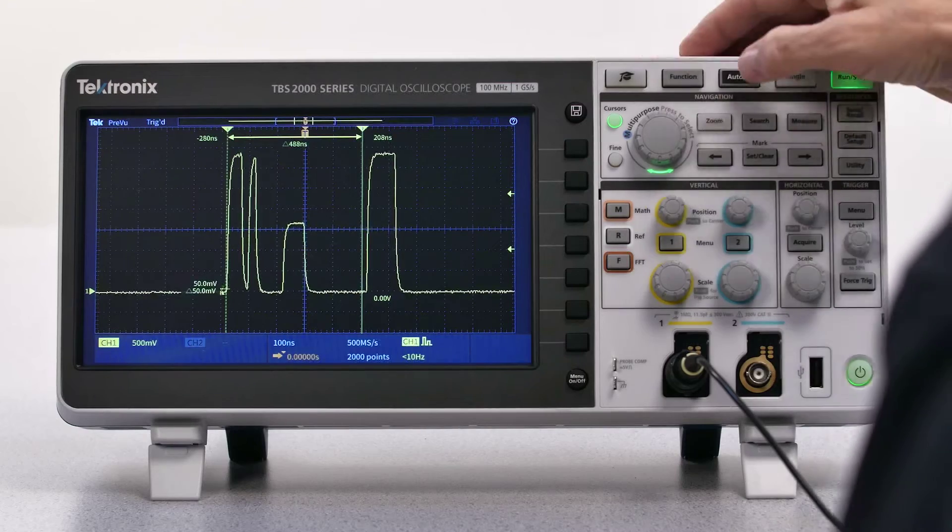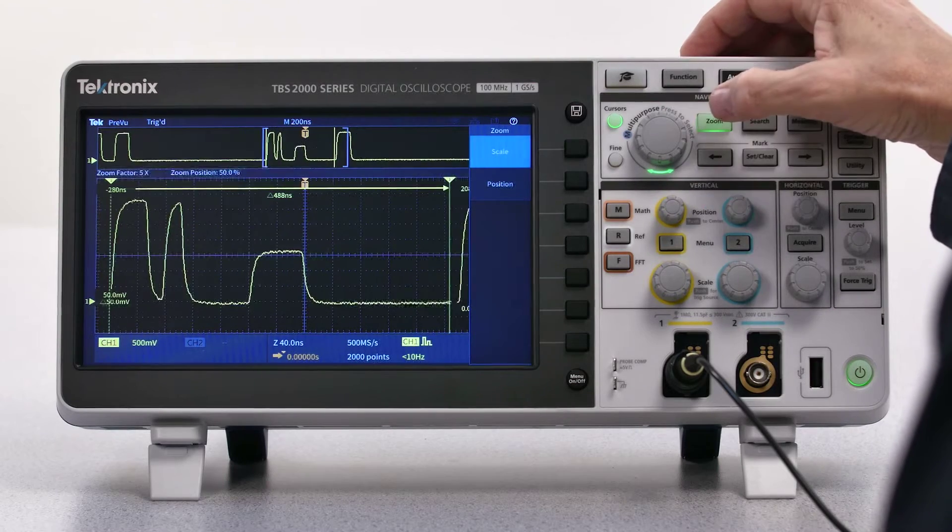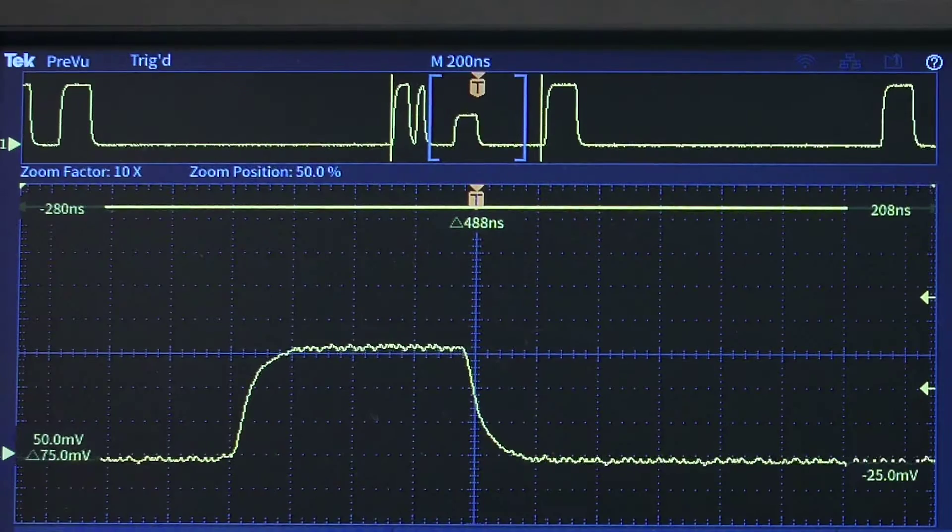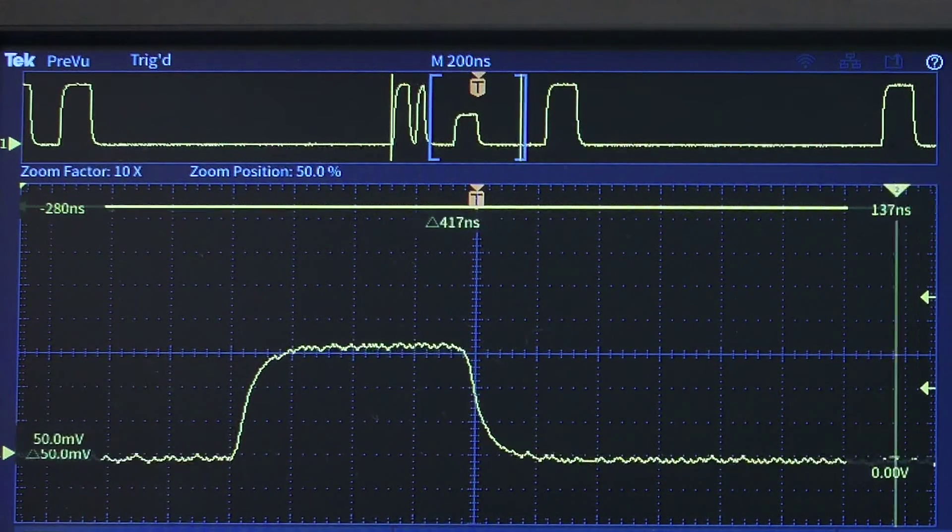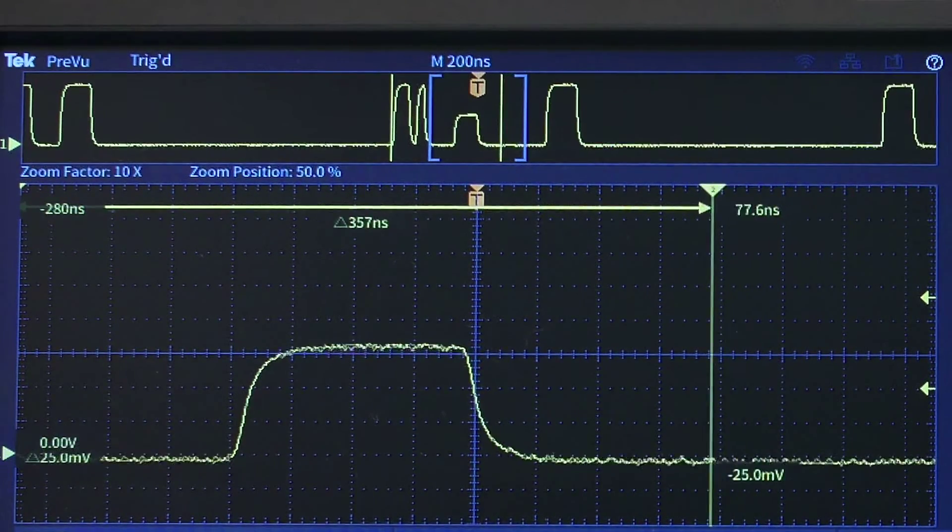Readouts display measurement values right on the waveform display, just as you would draw them in your notebook. And you can use the overview window to position cursors anywhere in the acquisition record.